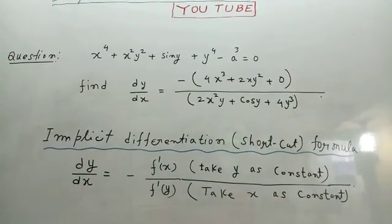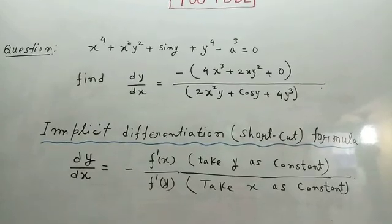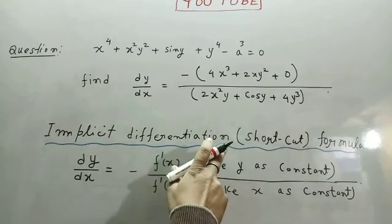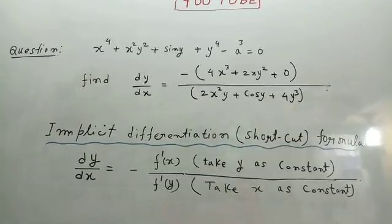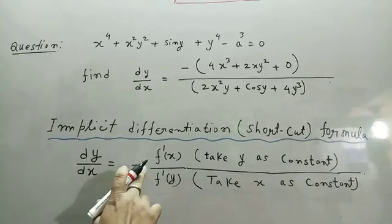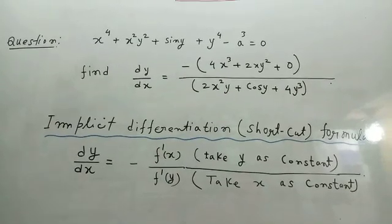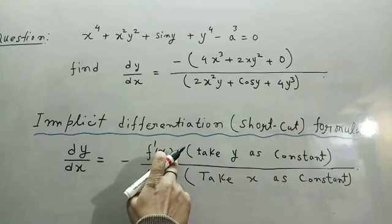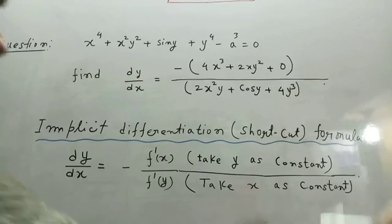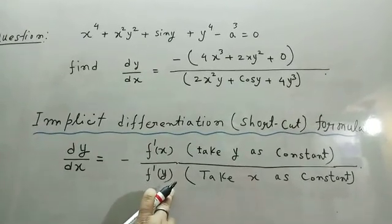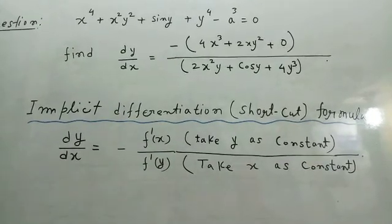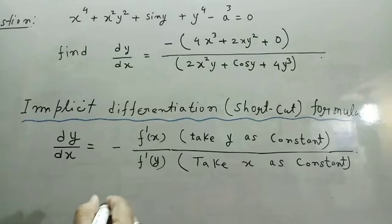Let's explain implicit differentiation using the shortcut formula: dy/dx = minus f'(x) upon f'(y). Here f'(x) means the derivative of f with respect to x, treating y as constant, and f'(y) means the derivative with respect to y, treating x as constant. For an implicit function, all terms come to the left side and the right side equals zero.